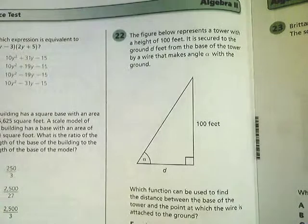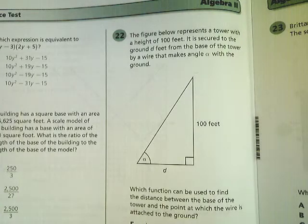This is the Algebra 2 practice test, question number 22. The question says that we have a figure that represents a tower with a height of 100 feet. It's secured at the ground d feet from the base, so here.